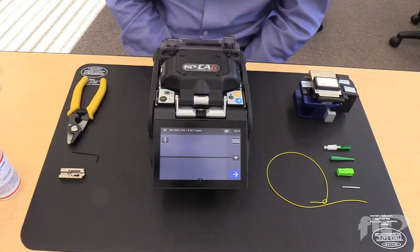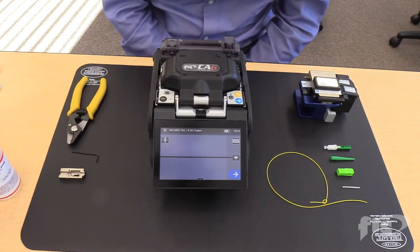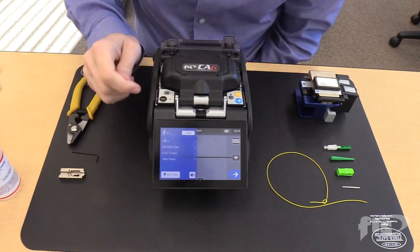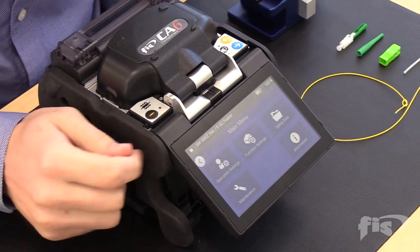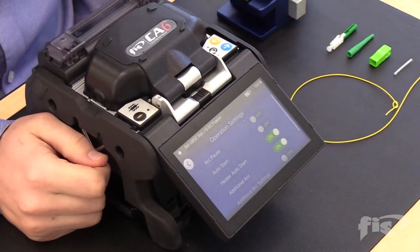Before terminating splice-on connectors, the fusion splicer needs to be set up. Click the menu icon on the top left of the screen, select menu and operating settings, and make sure the arc pause is turned off.